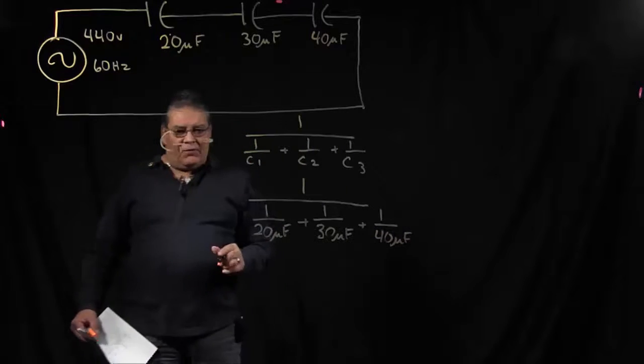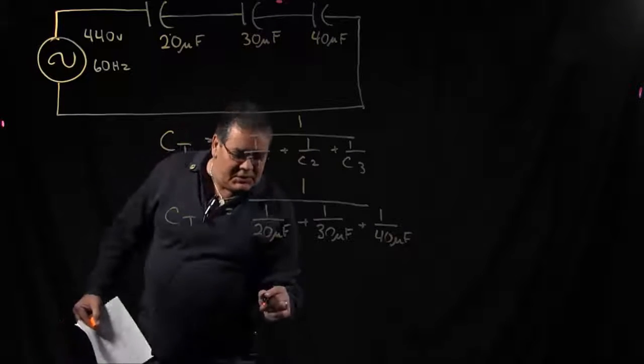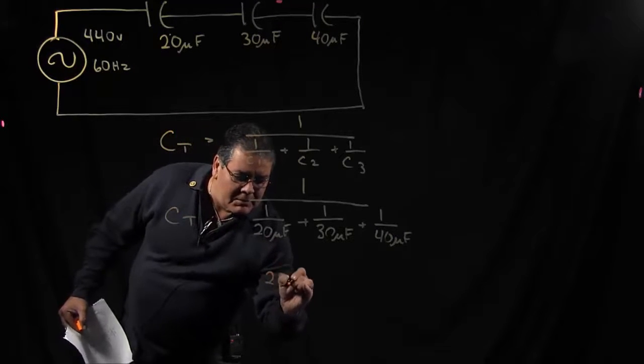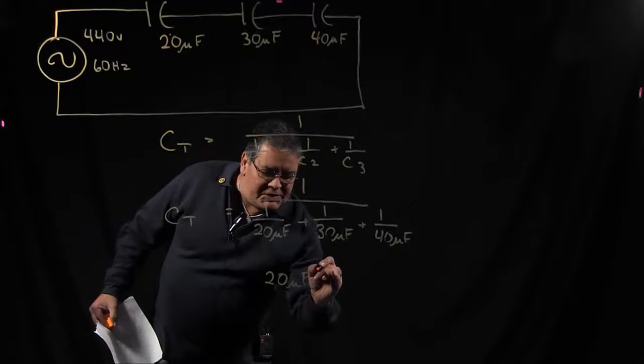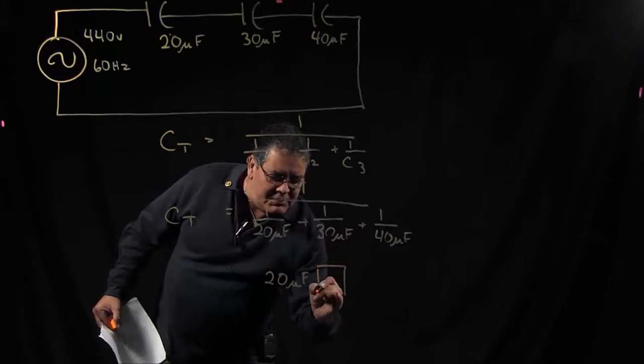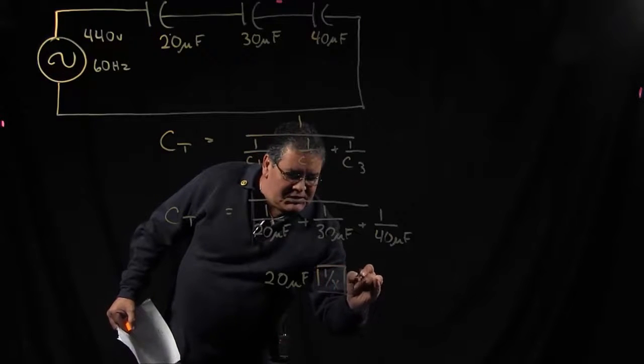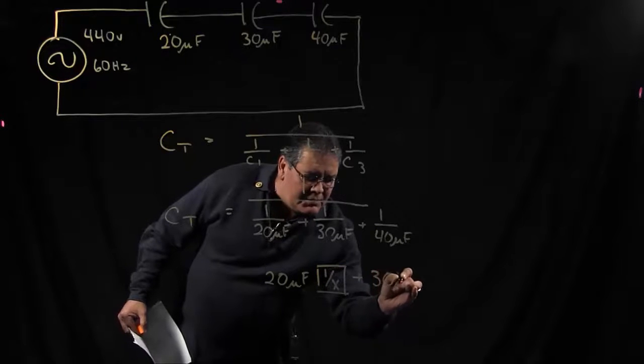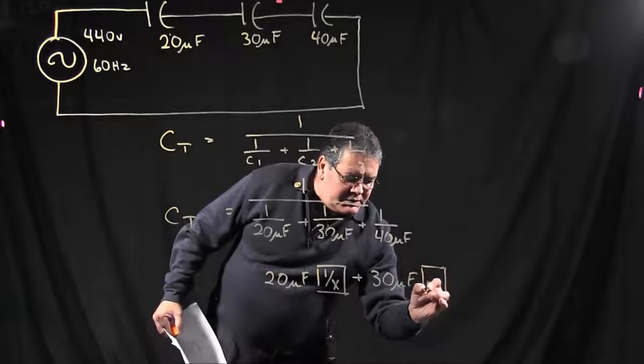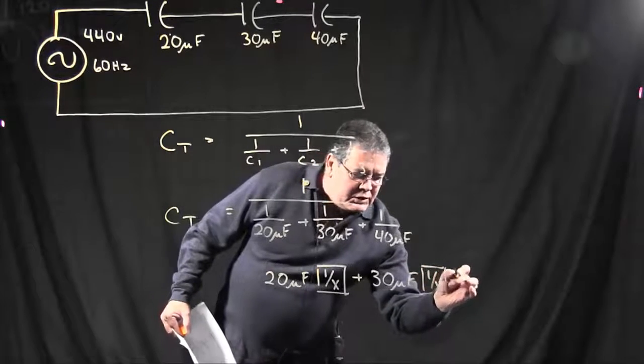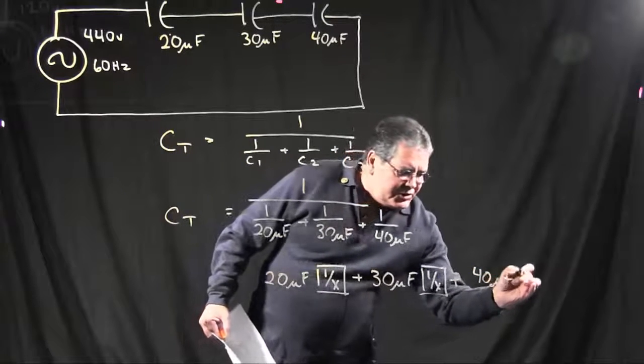So here again, this is where you've got to be real careful when you're plugging these numbers into your calculator. You would put 20 microfarads, hit your reciprocal button on your calculator, plus 30 microfarads, hit your reciprocal button again, plus 40 microfarads, and then hit your reciprocal button.